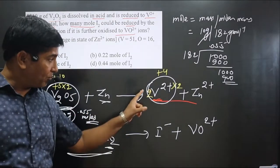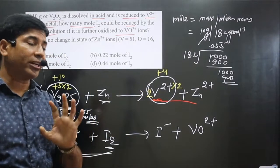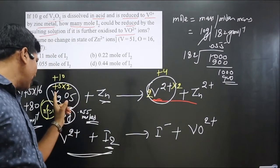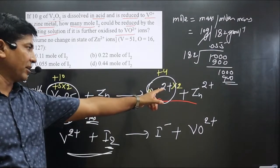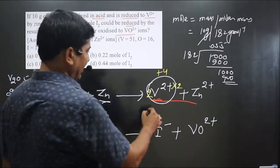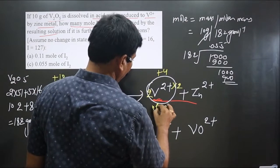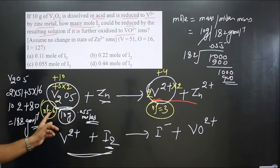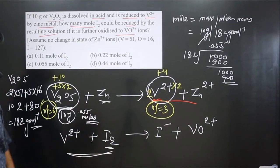We do not focus on coefficients to calculate the N-factor. For 1 vanadium: it goes from +5 to +2. The difference is 5 minus 2 = 3, so the N-factor per vanadium is 3. For 2 vanadium the N-factor is 6; for 1 vanadium it is 3.